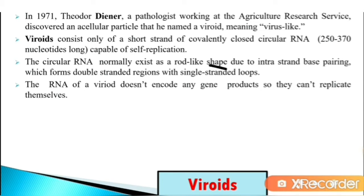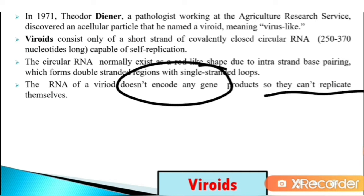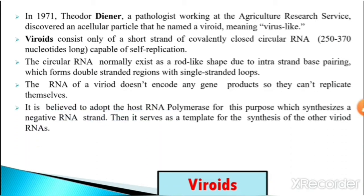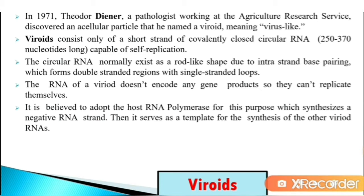Since viroid RNA does not encode any gene products, it is believed to adopt the host RNA polymerase for replication. This synthesizes a negative RNA strand, which then serves as a template for the synthesis of other viroid RNAs.